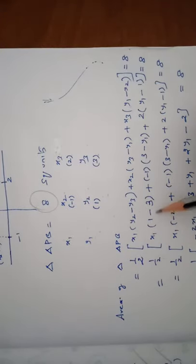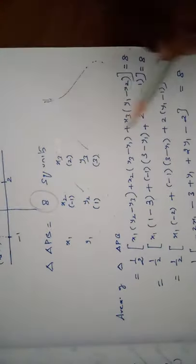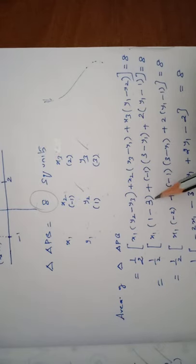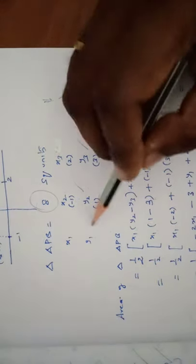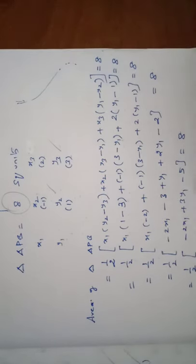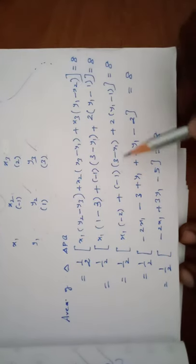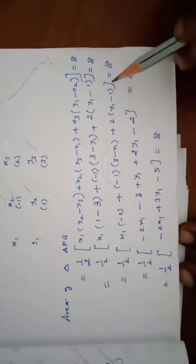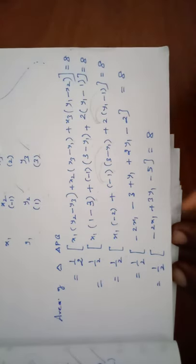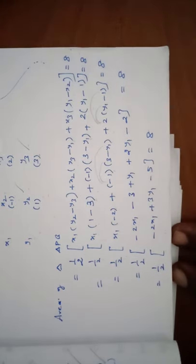Substituting values: half times [x1(1 minus 3) plus (-1)(3 minus y1) plus 2(y1 minus 1)] equals 8. Simplifying: half times [minus 2x1 minus 3 plus y1 plus 2y1 minus 2] equals 8, which gives half times [minus 2x1 plus 3y1 minus 5] equals 8.